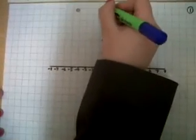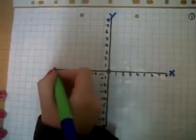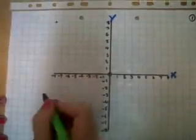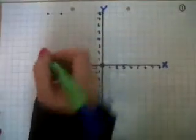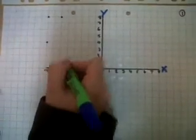First you have to plot the points of the shape which you need on your axis, which would be the coordinates of minus 8, 8, minus 6, 8, minus 8, 4, and minus 6, 4.